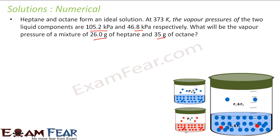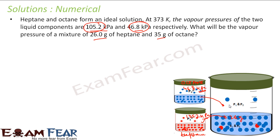So let's assign heptane as component 1 and octane as component 2. Given that the vapor pressure of heptane is 105.2 kilopascal and octane is 46.8 kilopascal — please pay attention to the units, it's all kilopascal. We are mixing 26 grams of heptane and 35 grams of octane.